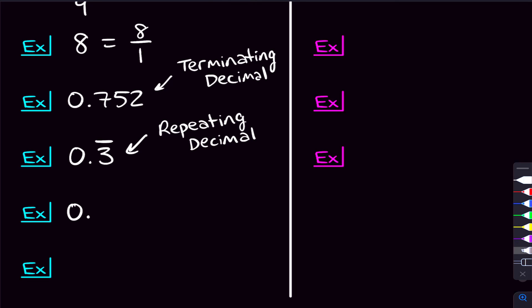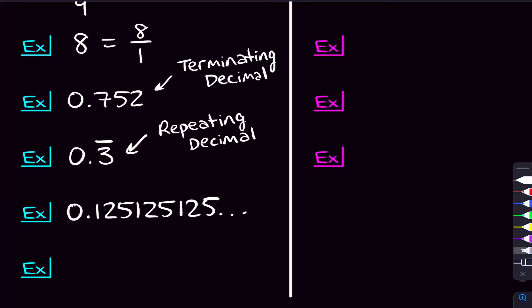There are other forms of repeating decimals you could see. You could see something like 1, 2, 5, 1, 2, 5, 1, 2, 5 — as long as there's a part that's repeating, like 1, 2, 5 being the repeating block, it still counts as a repeating decimal. So you could write this as 0.125 repeating.